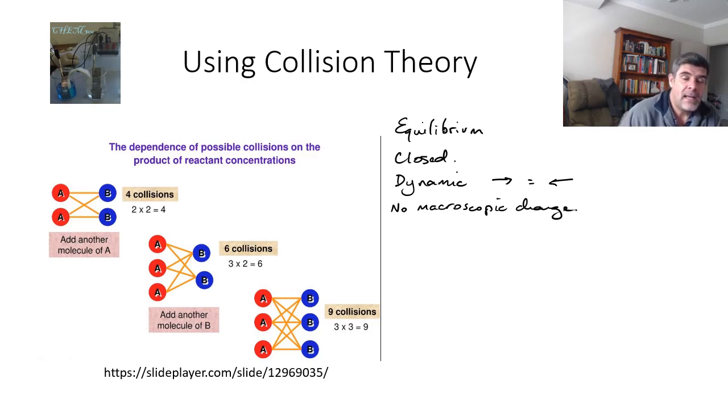For an application of Collision Theory, what we need to do is look at the fact that when we start any reaction, we're going to have our maximum value for the reactants and we're going to have zero products. As the reaction proceeds, the number of particles of the products increases and the number of particles of the reactants will decrease.